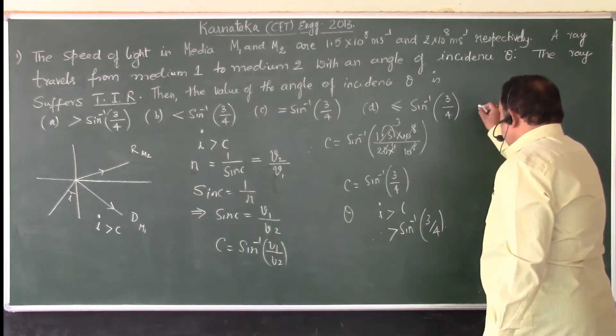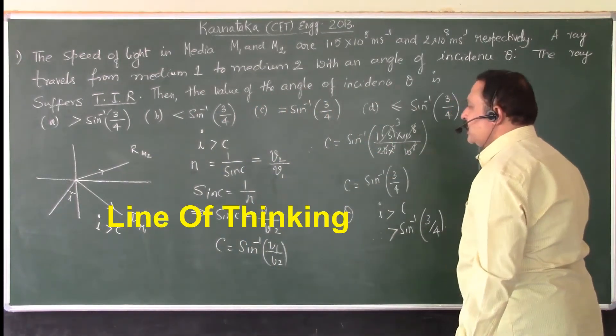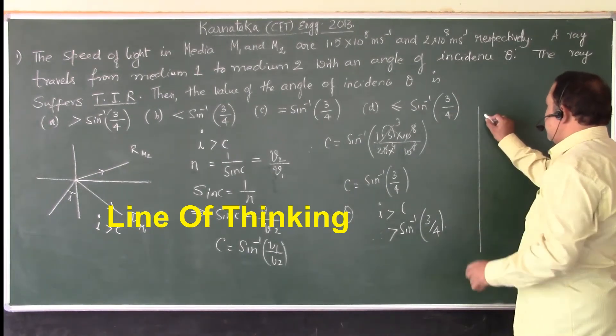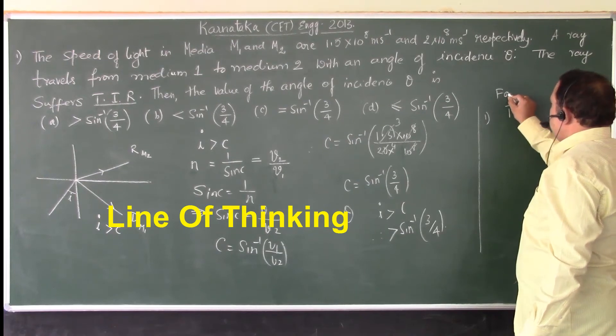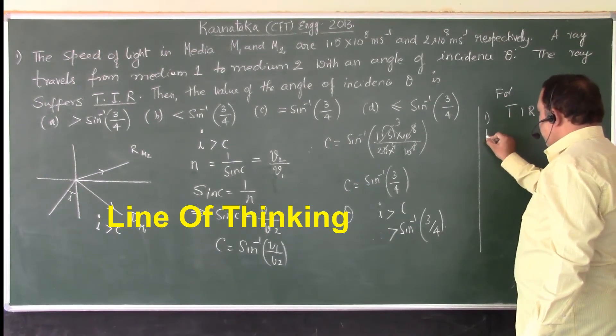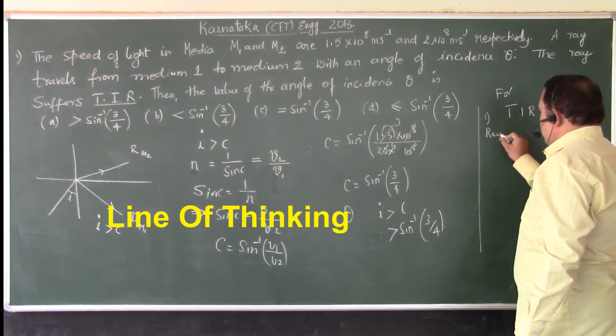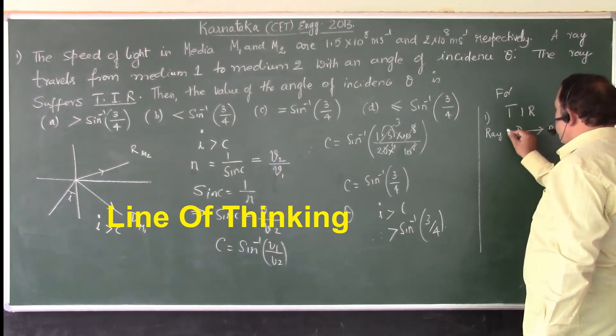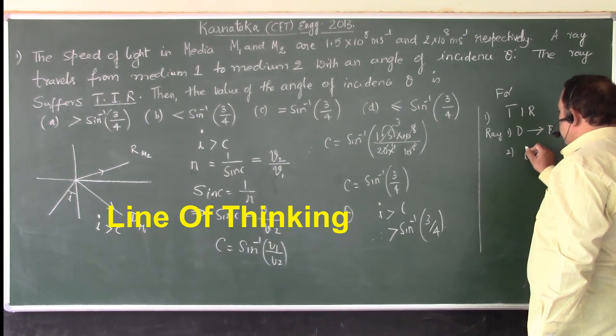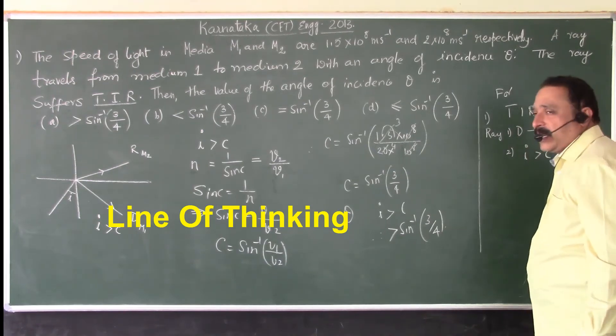What are the important things to be noted? The important things to be noted is that, whenever total internal reflection, the ray of light should travel from denser medium to rarer medium, point number 1. Point number 2, the angle of incidence must be greater than critical angle.